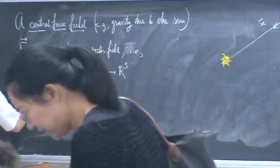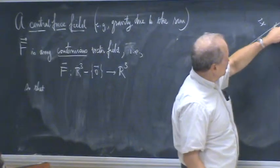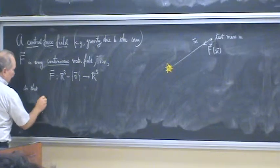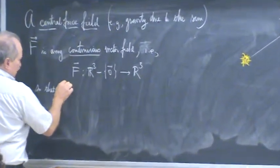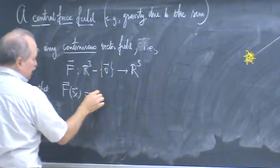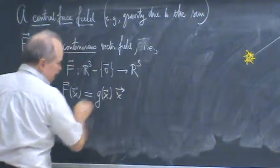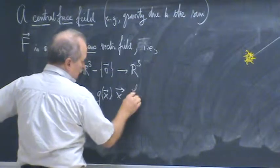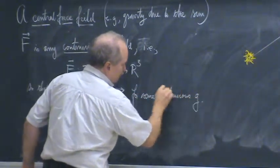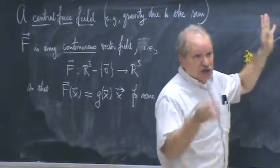With the property that the force at position X is acting in the direction of X — plus or minus. So F of X is some continuous function times X. All I'm saying for it to be central is that it acts in the direction of X, plus or minus.